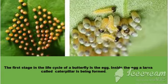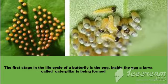The first stage in the life cycle of butterfly is the egg. The butterfly lays one or more eggs on the stem and underneath the leaves of the trees. The eggs are oval in shape. Inside the egg, a larva called a caterpillar is being formed. When the larva inside the egg becomes big enough to fill the entire shell, it chews a hole in the egg and comes out.